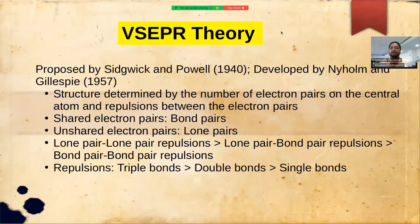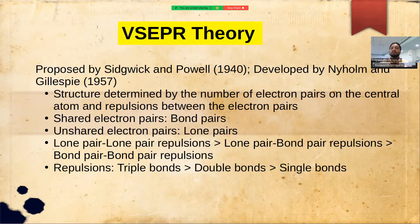Hello everyone, welcome back to the series of lectures on chemical bonding. In today's lecture, we will talk about Valence Shell Electron Pair Repulsion theory, in short called VSEPR theory. VSEPR theory was proposed by Sidgwick and Powell and it was developed by Nyholm and Gillespie. This theory is very successful in explaining the structure of a molecule, which is determined by the number of electron pairs present on the central atom and repulsions between electron pairs.